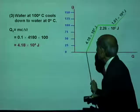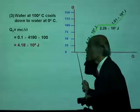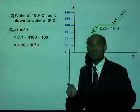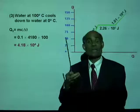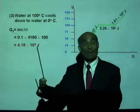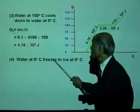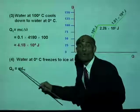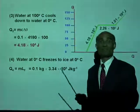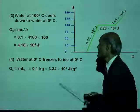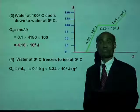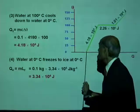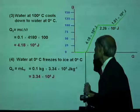The next stage: water at 0 degrees Celsius is going to freeze to ice at 0 degrees Celsius — no change in temperature, it's a change of state. The amount of heat liberated is mass times latent heat of fusion. Q4 equals 0.1 kilogram times 3.34 times 10 to the 5 joules per kilogram, giving 3.34 times 10 to the 4 joules.